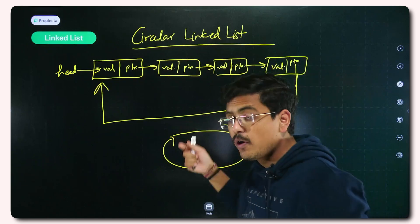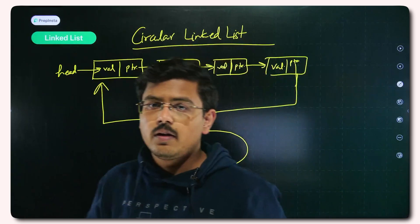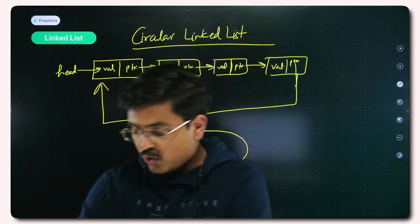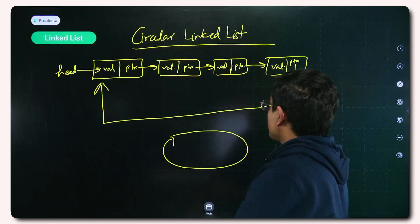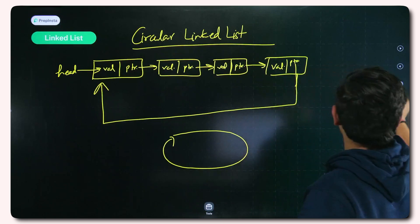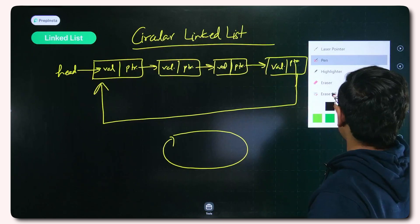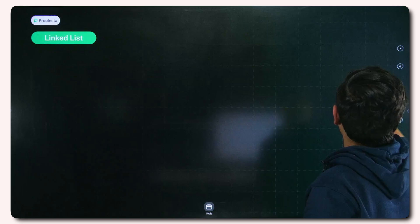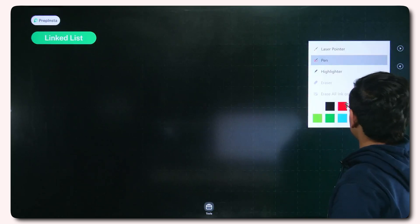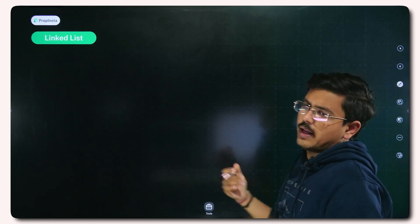A circular linked list is very helpful in round-robin scheduling. Doubly linked list is also very helpful there. Now let's check the last type — the doubly circular linked list.